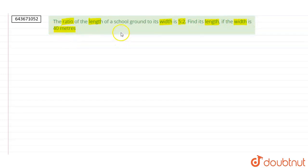Now in the question, it has been given that ratio of length to width is 5 is to 2. So let's say that length equals 5x and width equals 2x.